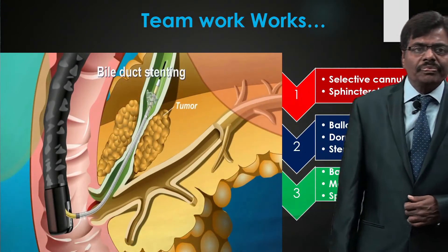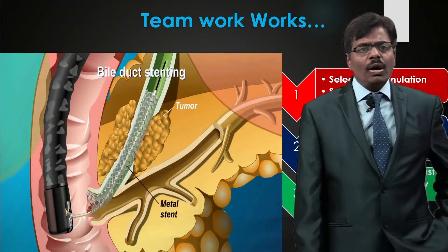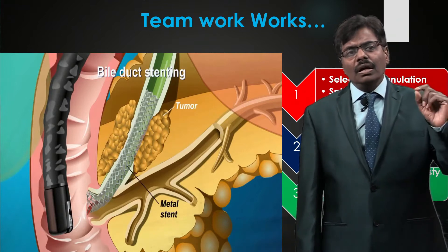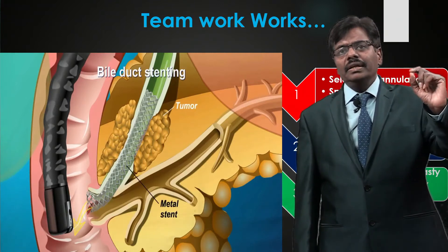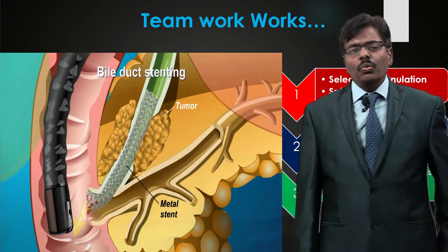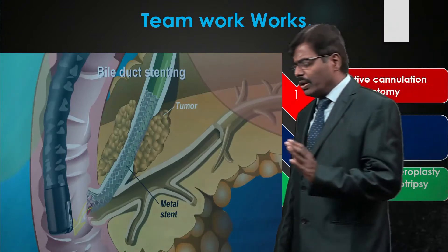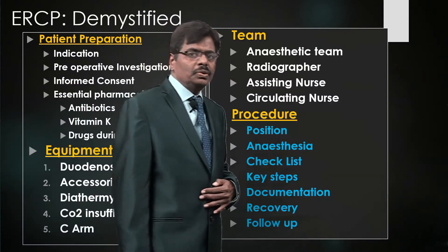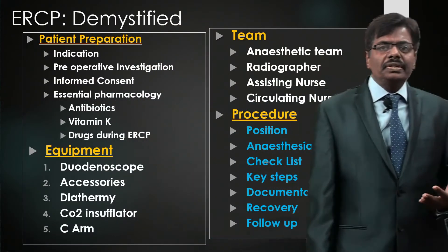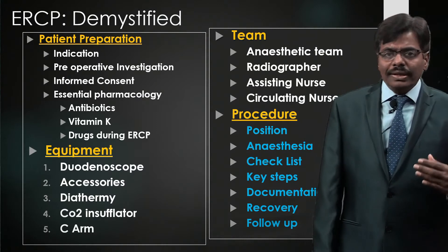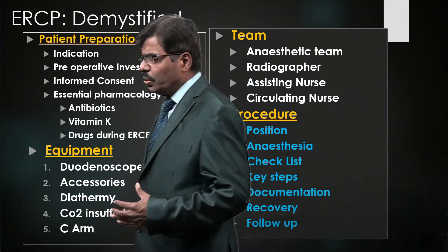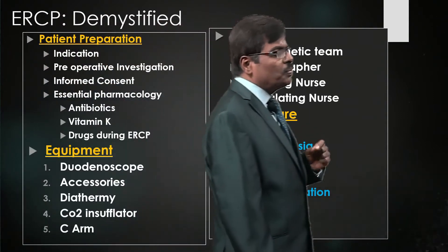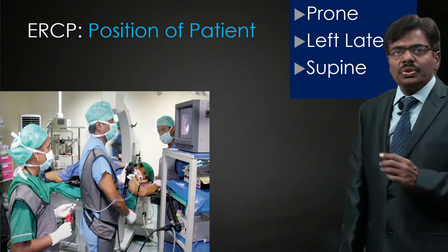This is the essence of what we are trying to achieve. Here is a glimpse of what a self-expanding metal stent looks like — it all goes through the channel of the ERCP scope. Once you know how to deploy them, with a good technician it will be a treat to perform and to see the patient recovering so quickly. Let me take you through the key steps to reach the ampulla with a couple of videos.